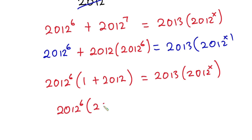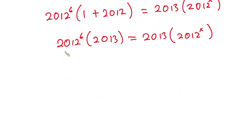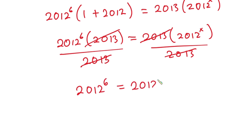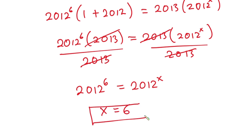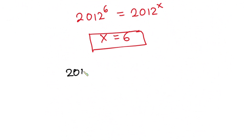Simplifying, we have 2012 to the power 6 times 2013, because 1 plus 2012 equals 2013. This equals 2013 times 2012 to the power x. Straight away, if we divide each side by 2013, the 2013s cancel, and we are left with 2012 to the power 6 equals 2012 to the power x. Since the bases are the same, x is equal to 6, and this is our final answer.